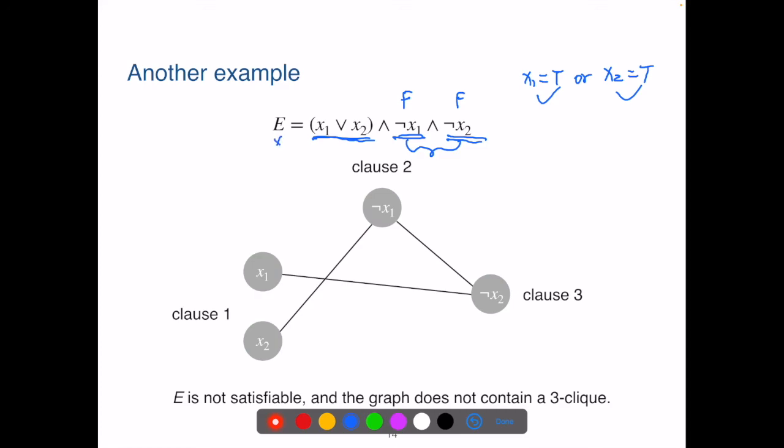And when we look at the graph G, we also know that we cannot find a 3-clique.